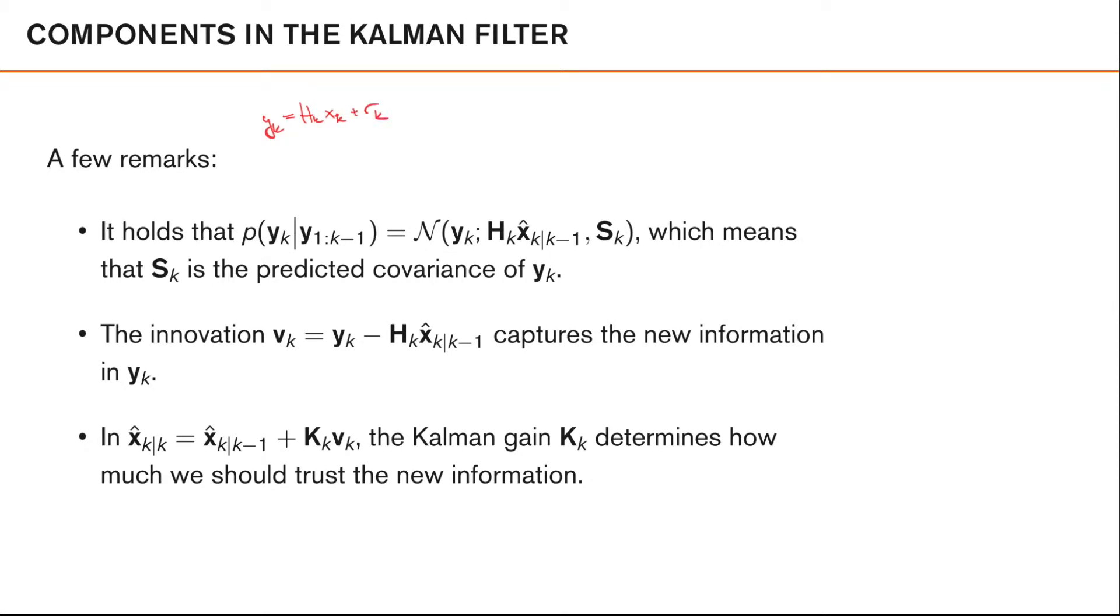By taking the expected value of this conditioned on the previous observations, so the expected value of yk conditioned on previous measurements, if we exchange yk using this expression here, we simply get which by definition is simply as rk here is zero mean.